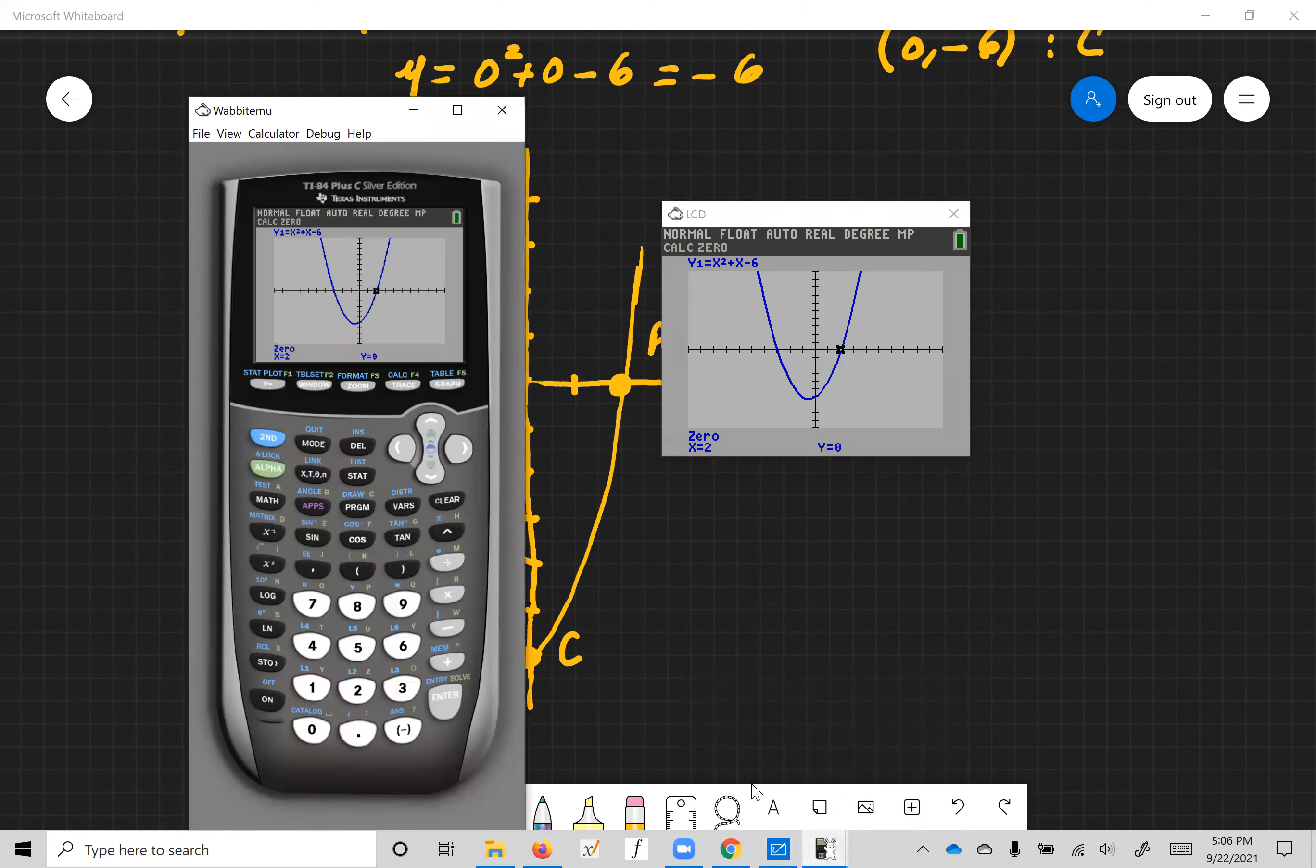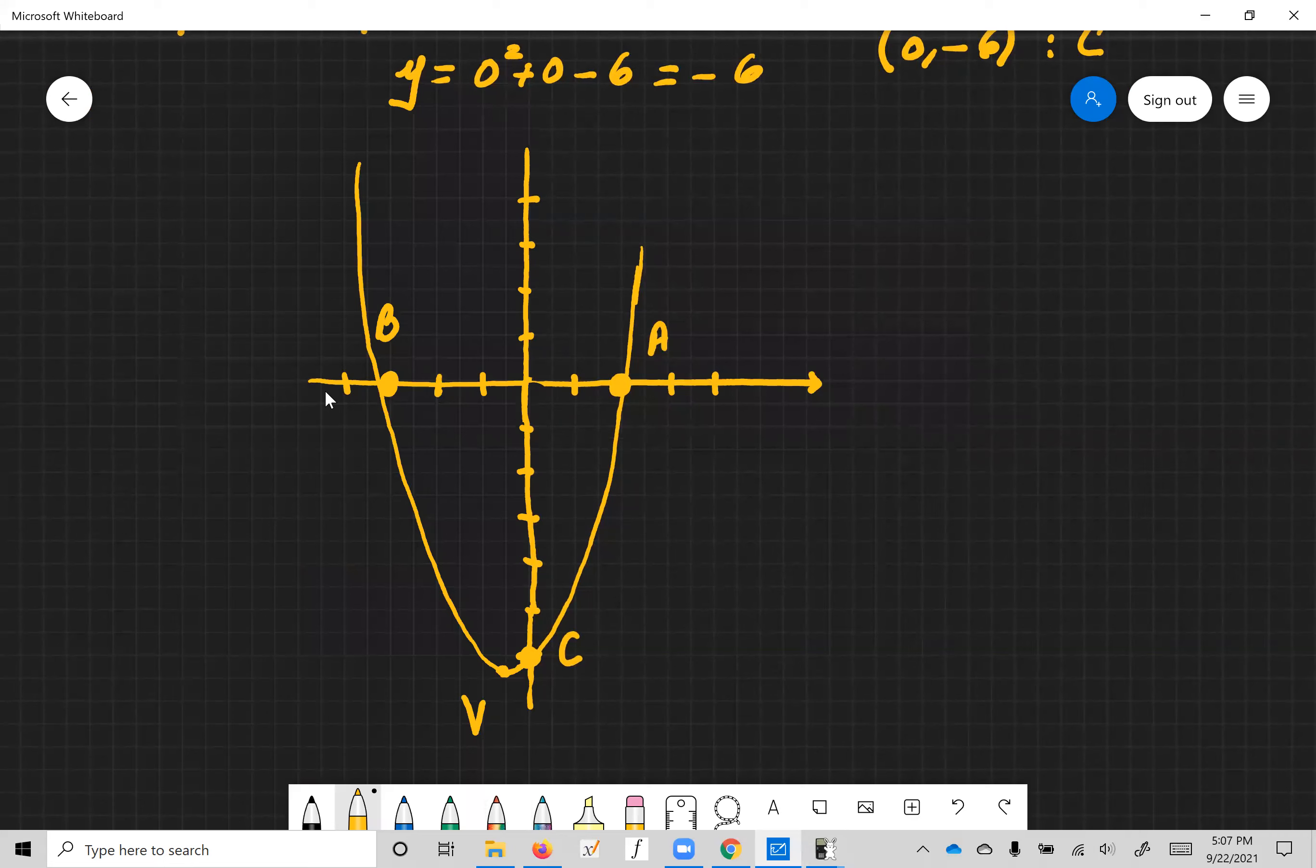And on the graph that we drew, it was right there. Okay, so that's good. Let's find the other zero now. Again, second calc, find the zero. Now let's go to the left of the other zero. Let's continue going until we are to the left of that zero. Almost there. There we are. Now we're to the left of the zero right here. Hit enter. See it drew you the vertical line, and obviously the vertical line is to the left of the zero. Now let's be to the right of that zero, just a little bit. Here we go. Hit enter and hit enter a third time, and it's negative three, zero, which is exactly what we have for point B.